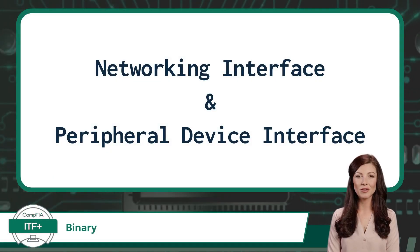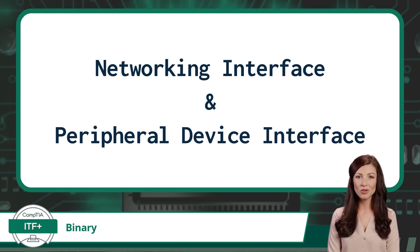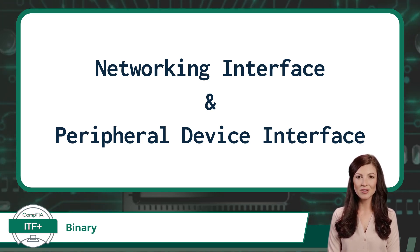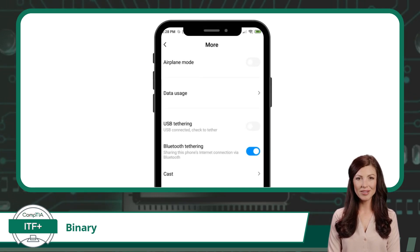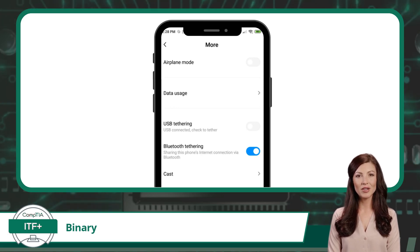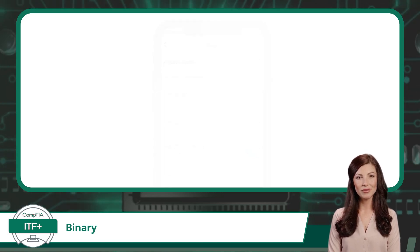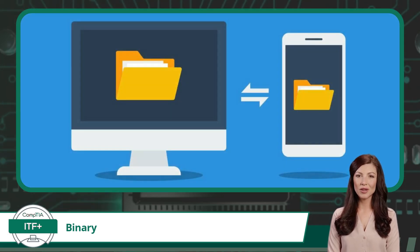Bluetooth is a versatile interface standard. As mentioned at the beginning of this video, Bluetooth is both a wireless networking interface and a peripheral device interface standard — two for the price of one. Networking interface uses include Bluetooth tethering, or the sharing of an internet connection from one device to another through a Bluetooth connection. There is also Bluetooth file sharing, which allows the transfer of files between devices.